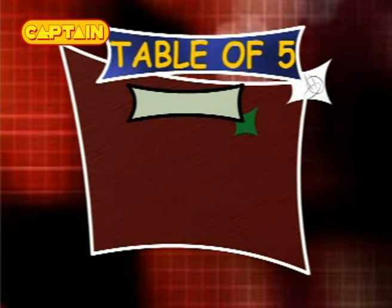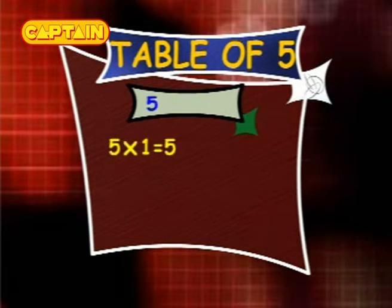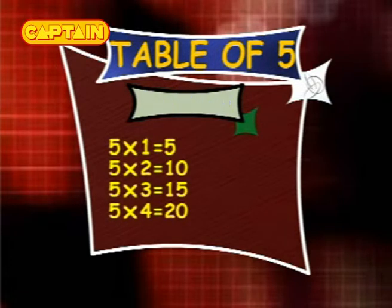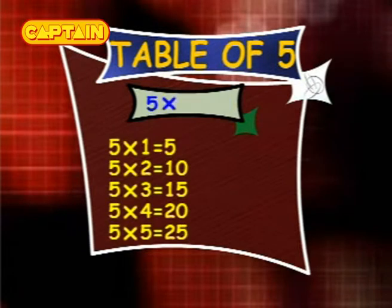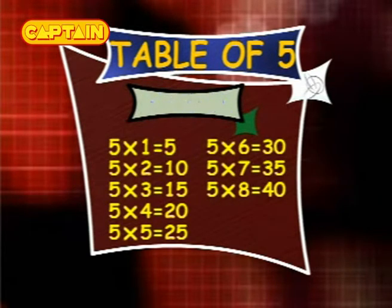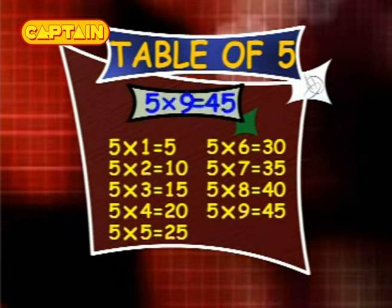Table of 5. 5×1 is 5. 5×2 is 10. 5×3 is 15. 5×4 is 20. 5×5 is 25. 5×6 is 30. 5×7 is 35. 5×8 is 40. 5×9 is 45. 5×10 is 50.